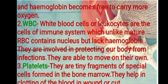White blood cells, or leukocytes, are cells of the immune system which, unlike mature red blood cells, contain a nucleus and lack hemoglobin. They are involved in protecting our body from infections and are able to move on their own. Blood platelets are tiny fragments of special cells formed in the bone marrow; they help in clotting of the blood at a wound or cut. That's all for this video lesson, goodbye everyone.